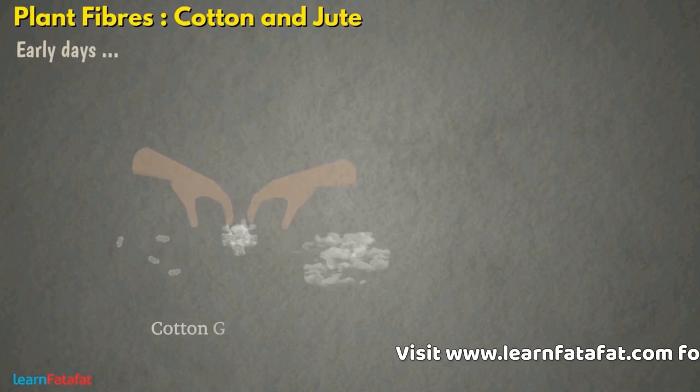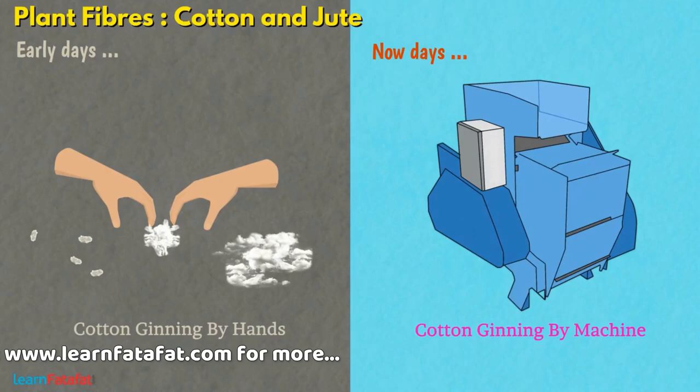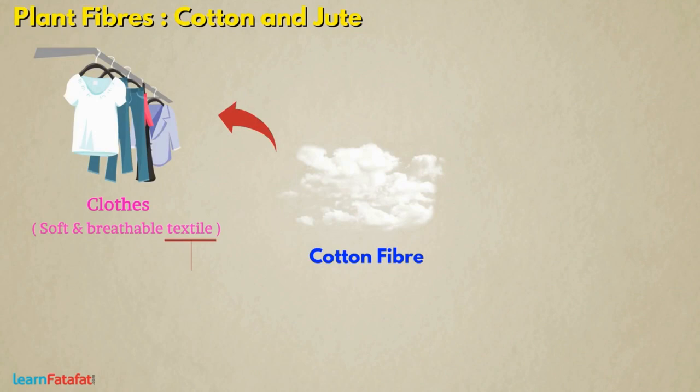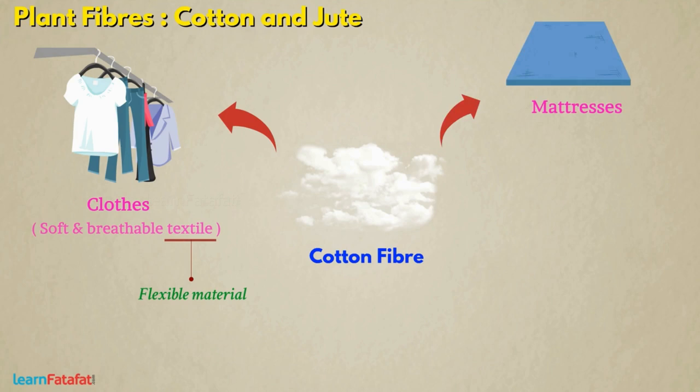Previously, ginning was done by hands. However, these days well-developed machines make the work easy. This is how we get cotton fiber. Cotton fibers are used for making clothes — the most soft and breathable textile. The word textile means flexible material made from fibers. Cotton is also used for filling mattresses, quilts or pillows.